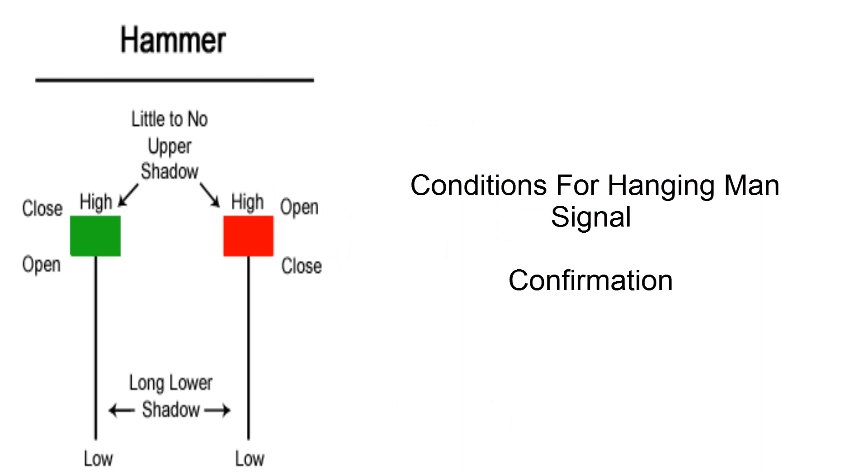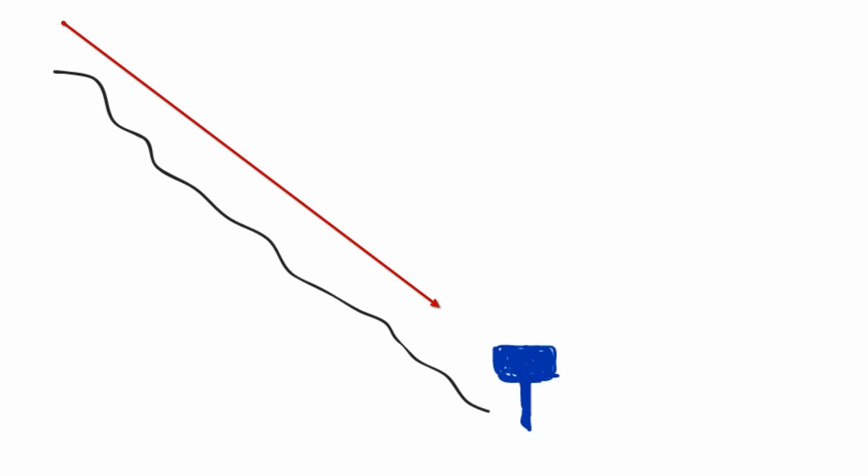Conditions for hammer signal confirmation: First condition, hammer should form after a downtrend. Second condition, lower shadow at least twice as big as the real body. Third condition, real body should be bullish. Fourth condition, confirmation next day bullish candlestick.